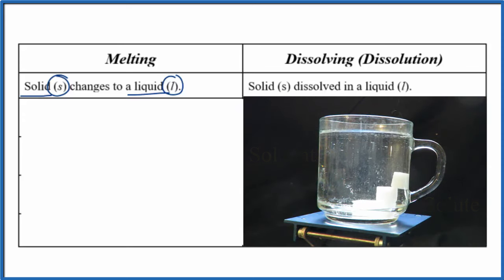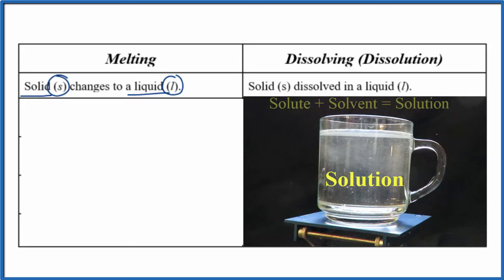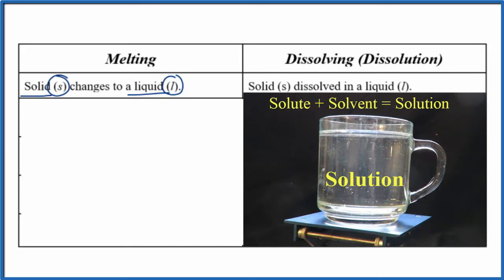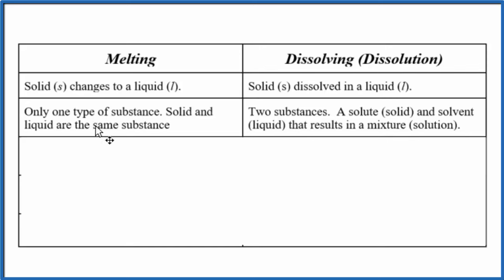So when we're talking about dissolving we have solute, solvent, and solution - three very specific terms - and we have more than one substance. The solute is different than the solvent. Sugar, that's the solute. Water, that's the solvent. And then the solution, it's sugar water. The key idea is that melting we only have one type of substance. Dissolving we have a solute and a solvent - two different substances.